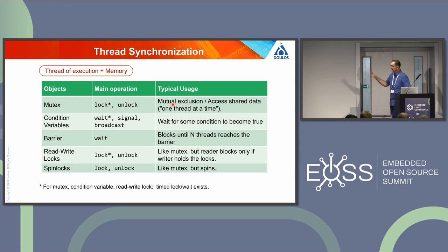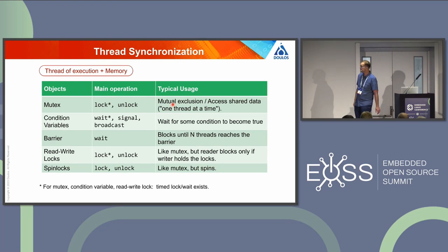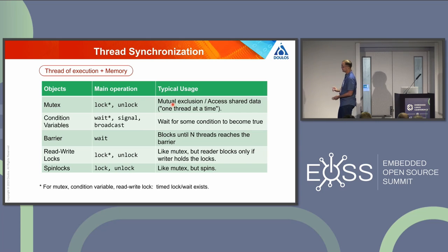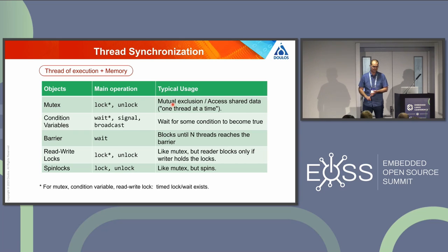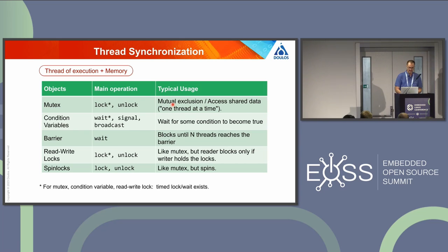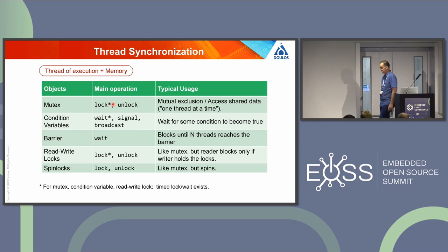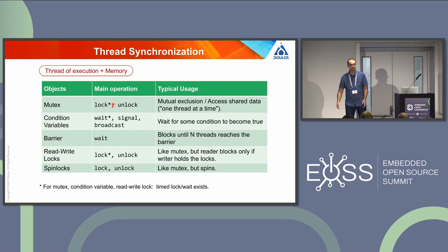There are other synchronization mechanisms I won't discuss in detail — barrier and spinlock. Also note that on embedded systems, we don't want to wait forever: some lock-and-wait APIs also have timed versions so we can have a timeout.